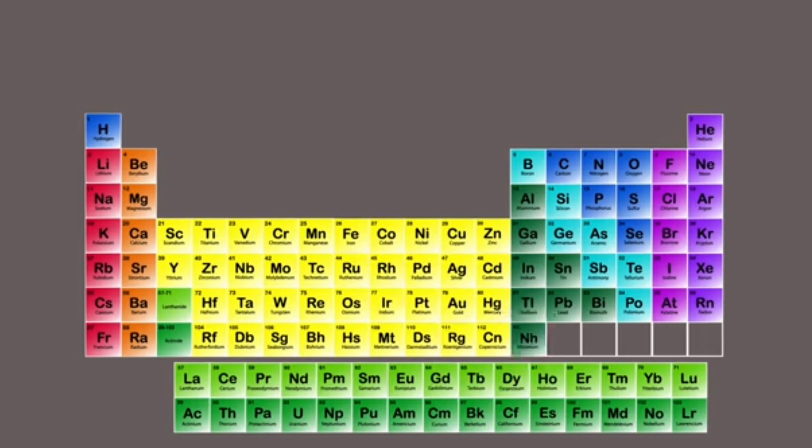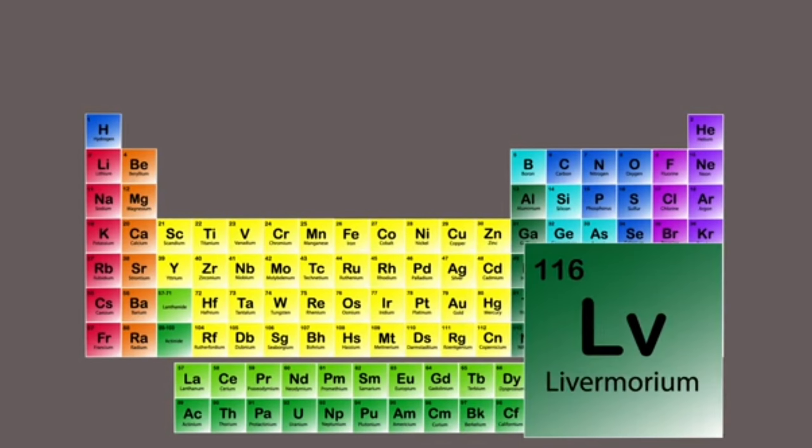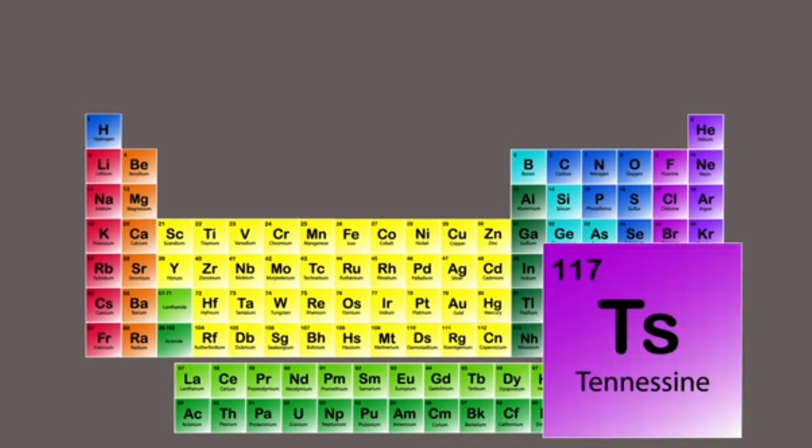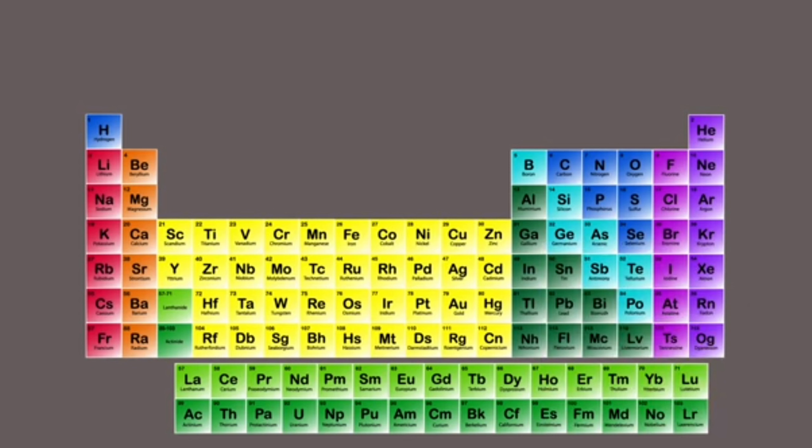Copernicium, Nihonium, Flerovium, Moscovium, Livermorium, and Tennessine, Oganesson is now on the scene. Here we have the groups of the periodic table.